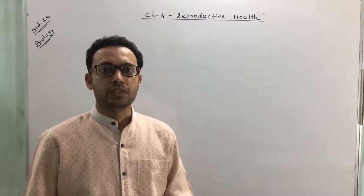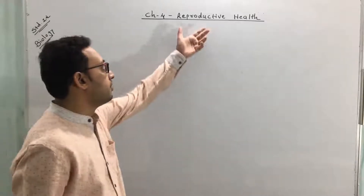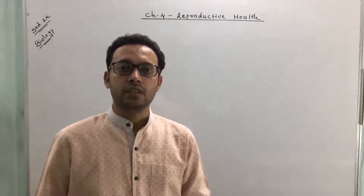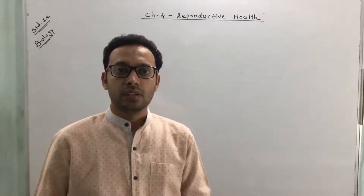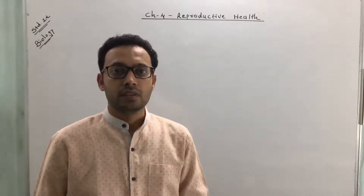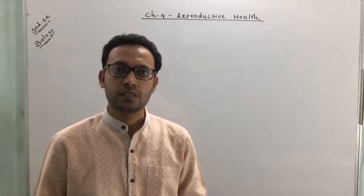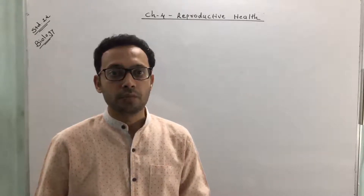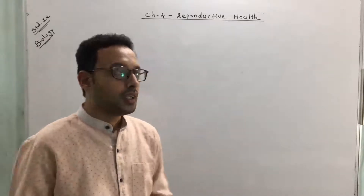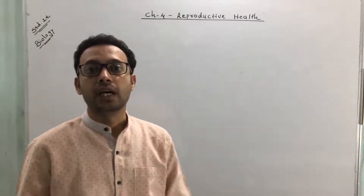Welcome back dear friends and students. Today we discuss chapter number 4, reproductive health. This is the last chapter in unit number 1, reproduction. Up till now we have finished reproduction in organisms, sexual reproduction in flowering plants, and human reproduction. Now we move to reproductive health.